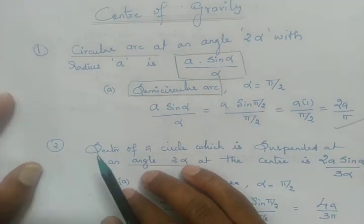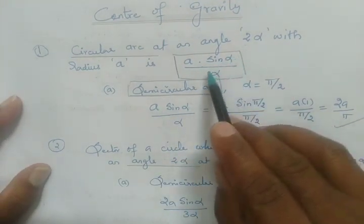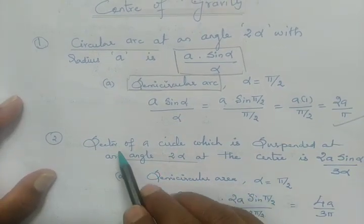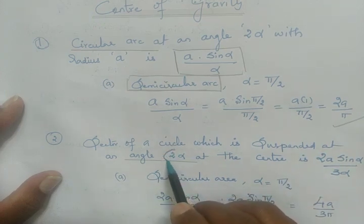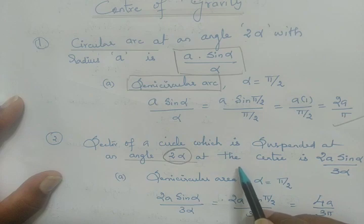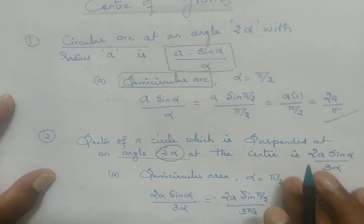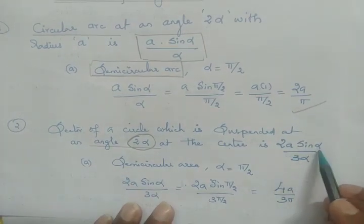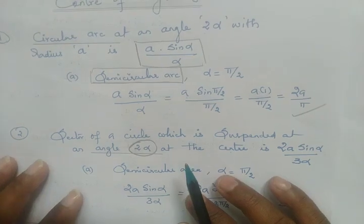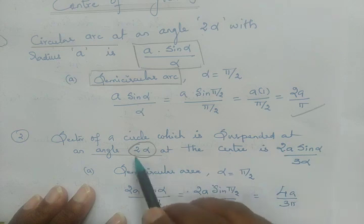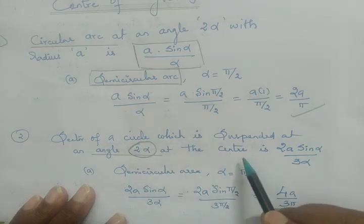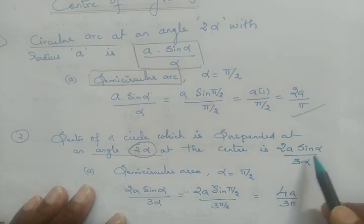If it is a circular arc, the center of gravity is A·sinα/α — in all options you choose A·sinα/α. Now, for the sector of a circle suspended at an angle of 2α, the formula becomes 2a·sinα/3α.